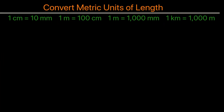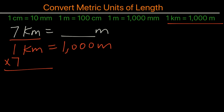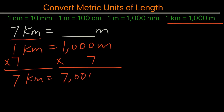Now what about this one? 7 kilometers equals how many meters? With this one, the conversion we want to use is 1 kilometer equals 1,000 meters. So we multiply by 7: 7 kilometers equals 7,000 meters.